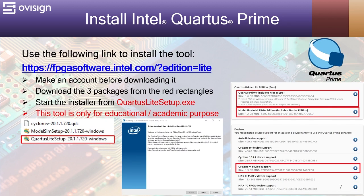To install Intel Quartus Prime, you need to go to Intel's site, make an account, and then download the three packages from the red rectangles. You will have three new files in your download folder, and you will have to double-click the Quartus Lite setup. After this, you have to follow the installation steps and click the Next button.